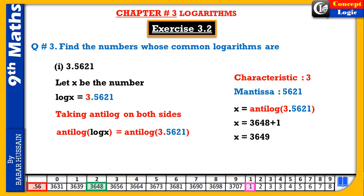اب decimal position ڈالنی ہے۔ Left side سے first digit کے بعد start کریں اور جتنا characteristic ہے اتنے digits right طرف count کریں۔ Anti-log لے رہے ہیں 3.5621 کا — characteristic three ہے، مطلب three digits right move کریں۔ One, two, three — وہاں decimal لگا دیں۔ Right extreme پر decimal نہیں لکھتے، اس لیے omit کریں — answer: 3649۔